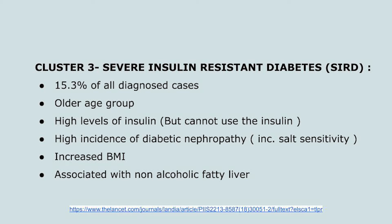Cluster 3 is severe insulin resistant diabetes, with 15.3% of patients. These were mainly older individuals with high insulin levels in the body, yet unable to use insulin due to insulin resistance. They had a high incidence of diabetic nephropathy and increased BMI.